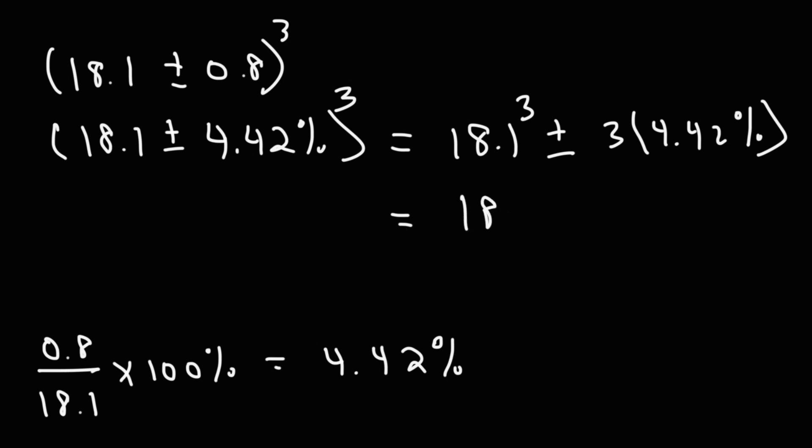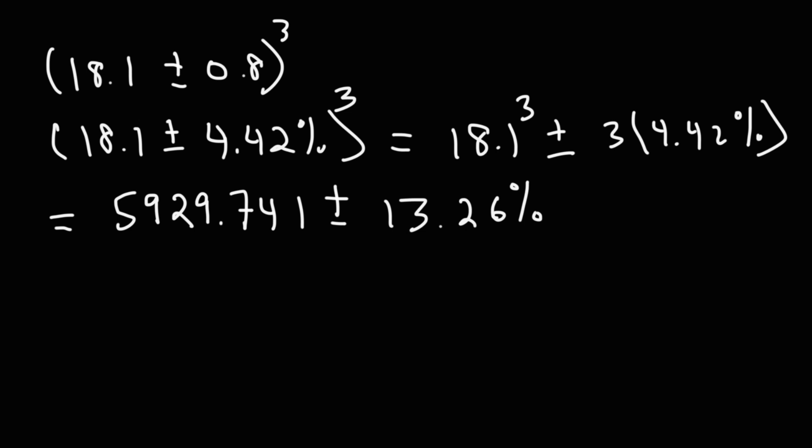And that becomes, let's cube it first. 18.1 to the third power, I'm going to need more space. That's 5,929.741. And then plus or minus 3 times 4.42%. That's 13.26%. So now what we need to do is find out how much is 13.26% of the measured value. So I'm going to multiply the two numbers and then divide it by 100%. This comes out to being 786.28.